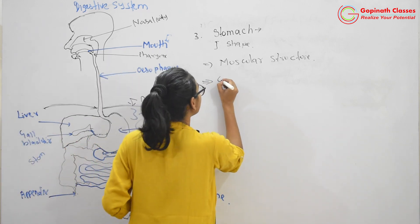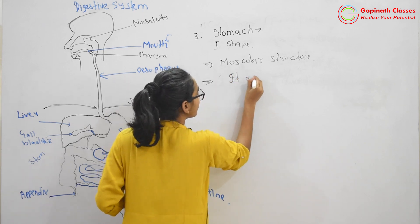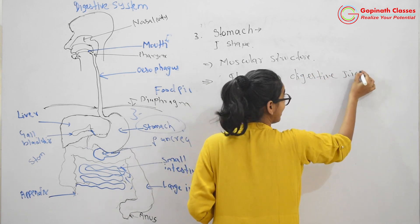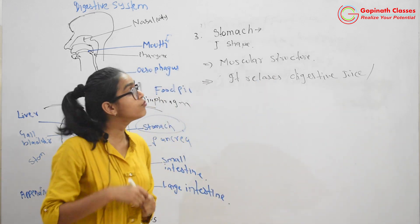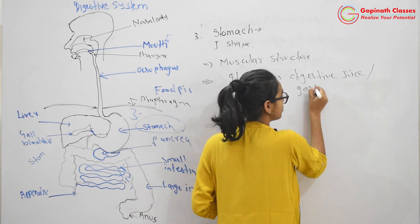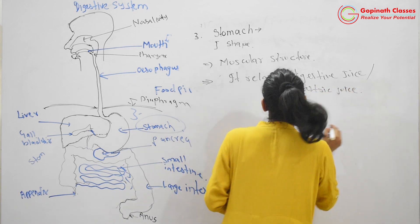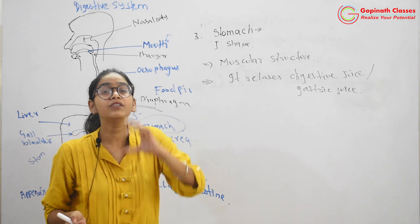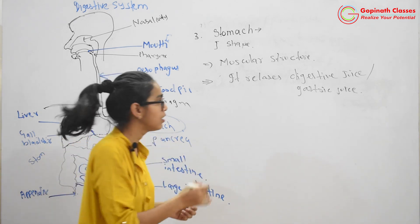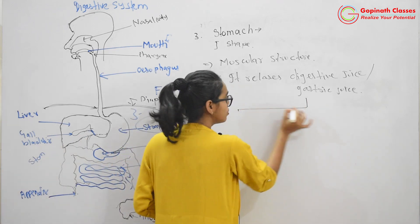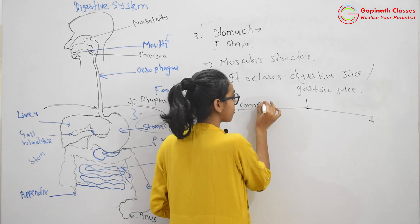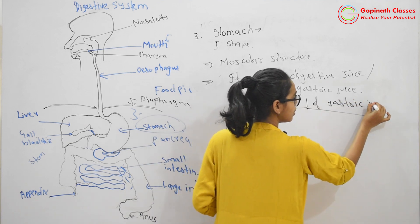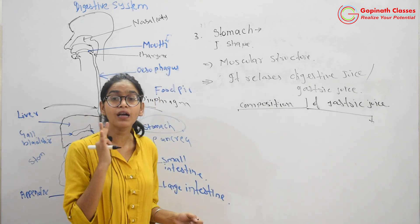Its composition - stomach releases digestive juice. Again, it is a common term. Now, the scientific word used is it is called gastric juice. So it's very very important. Stomach releases gastric juice. This juice is made up of three different things. Now, what are those things? So now we are going to study composition of gastric juice. So now it has three components. Very very important.